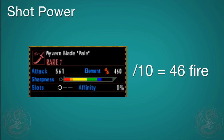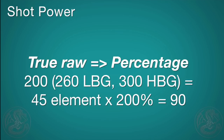The true power of an elemental shot comes from the element, which is 45. This would be the same as 450 on a blademaster weapon because for those they show the elemental power times 10 on the stats screen. However, unlike blademaster weapons, it also increases in relation to your weapon's raw attack power. Just take the true raw attack power of your weapon and convert it into a percentage. So if you have 200 raw, that's 200% of 45 elemental damage, meaning one shot will do 90 elemental damage.